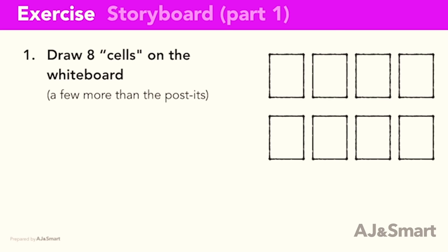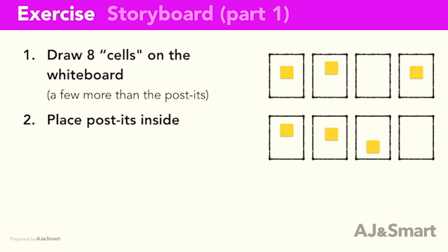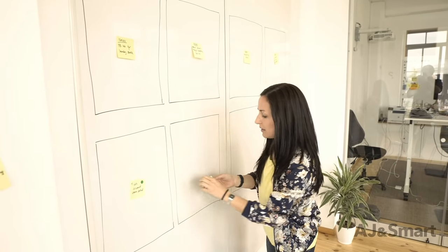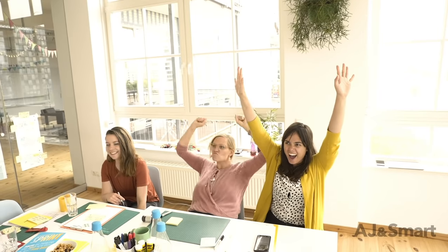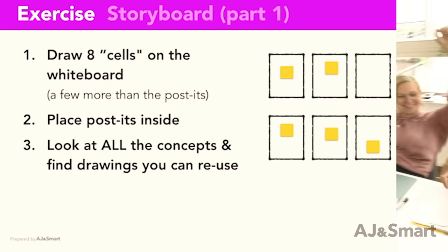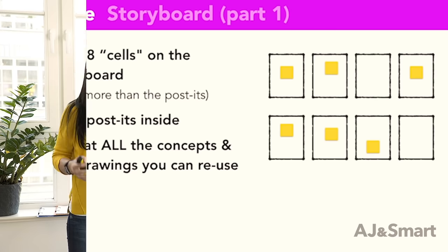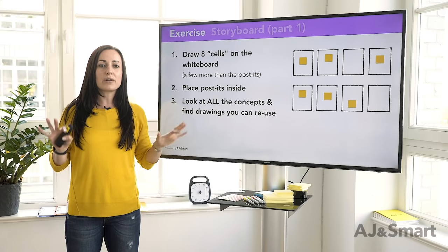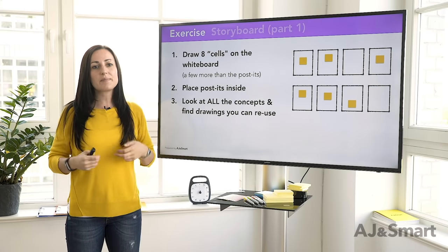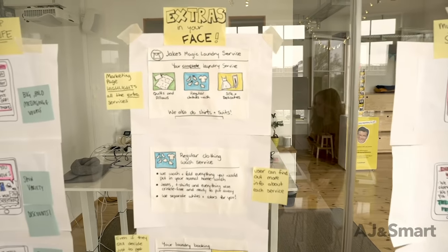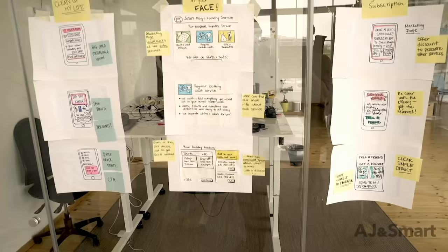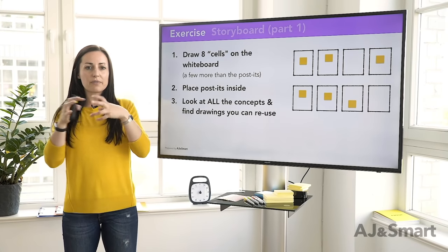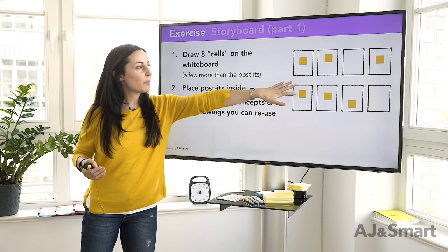Then place those six post-it notes inside the boxes — you can leave a few spare ones if you think a post-it might take up a bit more space. You can always move them around, so don't stress. A really key step is looking back around the room where you should still have the concepts all around you, including the winning concept — the one you chose to go ahead with — and see if you can find drawings and parts of drawings that you can actually reuse, that maybe already have good illustrations of something in one of these post-it notes.